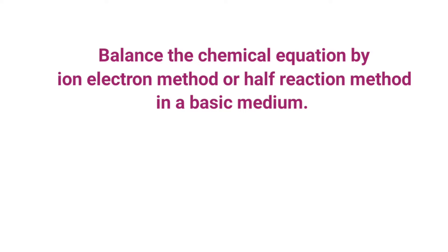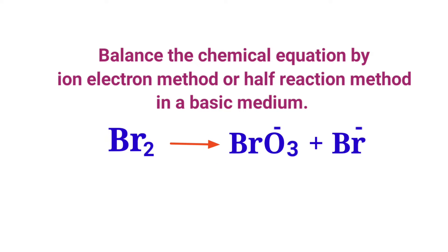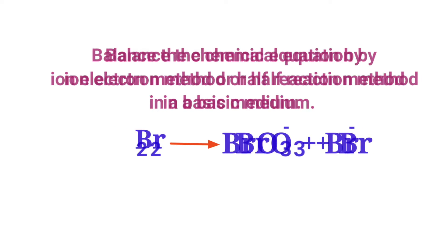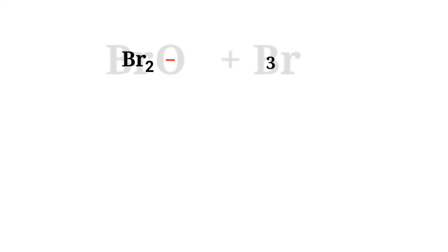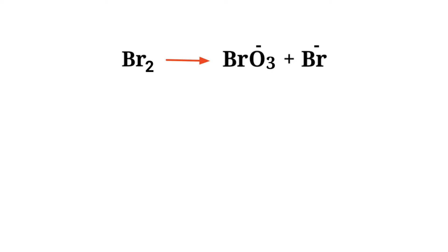Balance the chemical equation by the ion electron method, or half reaction method, in a basic medium. Bromine gives us bromide ion plus bromide ion. Figure the reducing and oxidizing agents by the rules of assigning oxidation numbers. In the ion electron method, one reaction is divided into two half reactions, which are then balanced and added together.